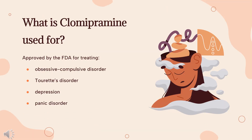What is Clomipramine used for? It may be used to treat obsessive-compulsive disorder and disorders with an obsessive-compulsive component, e.g., depression, schizophrenia, and Tourette's disorder.